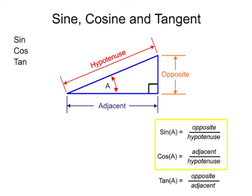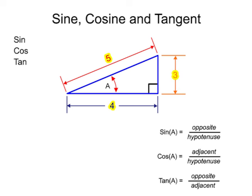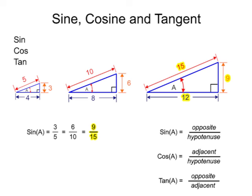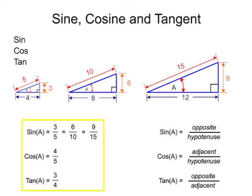Since the sine, cosine, and tangent functions are ratios, the actual length of the sides can vary and produce similar angles. For instance, in this triangle, the sine of angle A is equal to three-fifths. If we doubled or even tripled the size of the triangle, the ratio would still simplify down to three-fifths. Since the value of the ratio is the same for a given angle regardless of the size of the triangle, these functions are easily determined with a calculator.